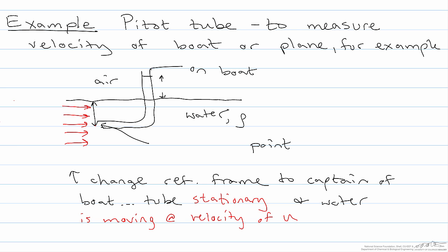Now what happens is that water moves at a velocity of u through this tube until it gets stuck at this point, and it turns up, and then it's pushing a column of water up into this tube.